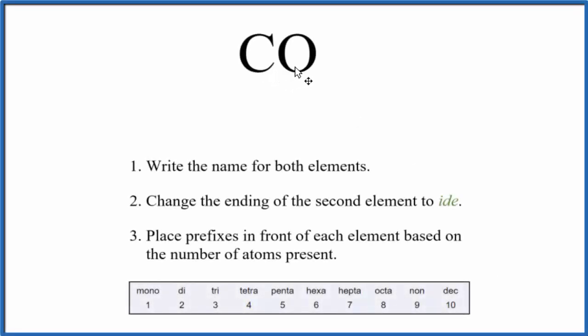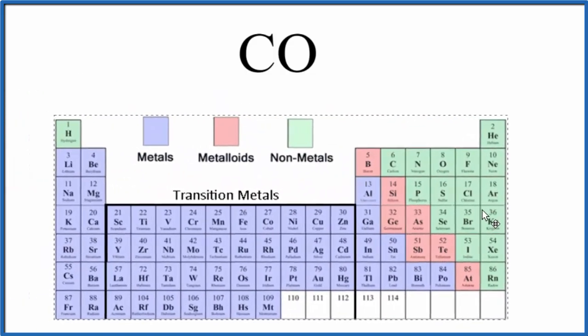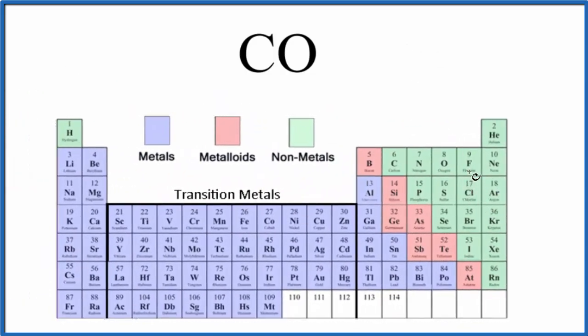To write the name for CO, we first have to figure out what type of compound we have. If we look at the periodic table, we'll see that carbon and oxygen are both nonmetals. When we have two nonmetals, that's a covalent or molecular compound, which we need to consider when writing the name for CO.